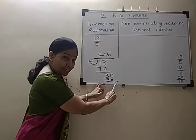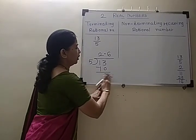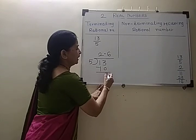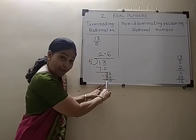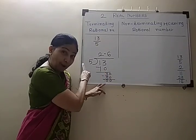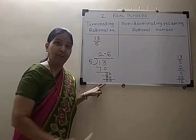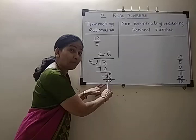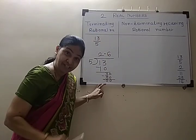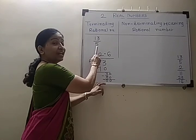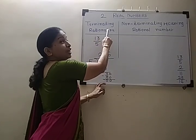When the remainder comes to 0 after division, that means the division gets completed — it is stopping, it is terminating here. So, this number 13 upon 5 is a terminating rational number.